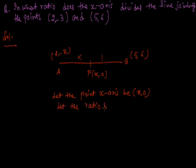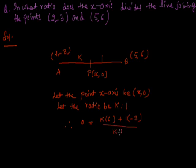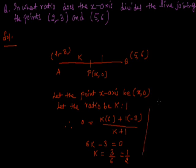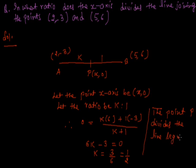Let the ratio be k is to 1. Since the y-coordinate on the x-axis is 0, we write: 0 = (k × 6 + 1 × (-3)) / (k + 1). So 6k - 3 = 0, giving k = 3/6 = 1/2. Therefore, point P divides the line segment in the ratio 1 is to 2.